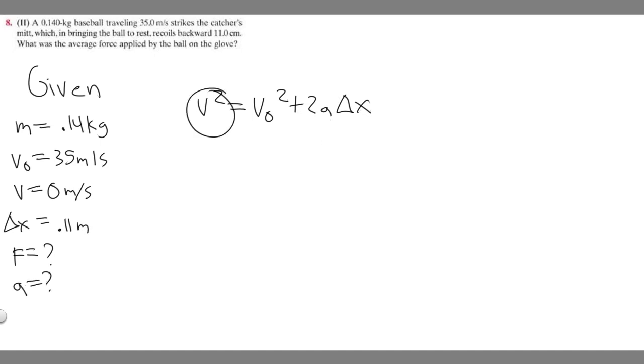Let's plug everything in. We know v equals 0 so 0² is 0, so 0 = 35² + 2a·Δx. We're solving for a so we leave it as a, and delta x is 0.11.